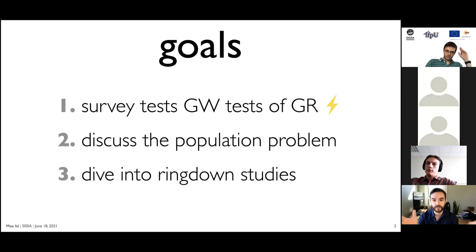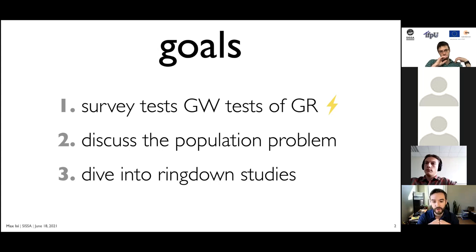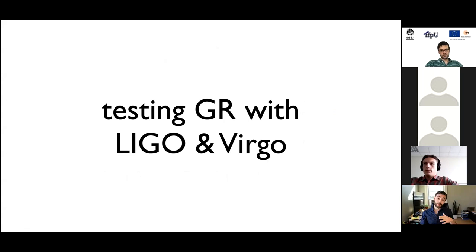I'll use the PN coefficients as an excuse to tell you about the problem of how to combine multiple observations to make cohesive statements about testing GR — not just one signal but many signals, and how to do that properly. Then I'll pivot to talk about ringdown studies, which I find personally to be one of the most exciting topics, with many recent developments I'd like to contextualize.